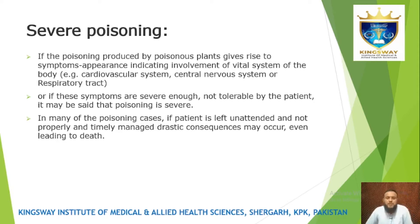If the poison produced by poisonous plants gives rise to symptoms indicating the involvement of vital systems of the body — the cardiovascular system, spinal nerve system — this is a dangerous state of poisoning. It may also affect the central nervous system, CNS, or the respiratory tract, which are directly affected by this type of poisoning.